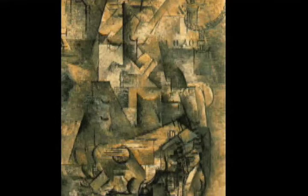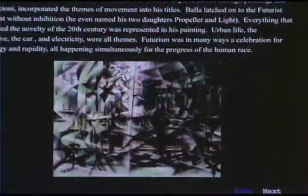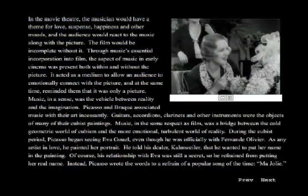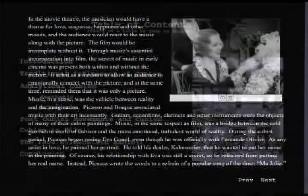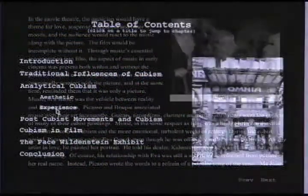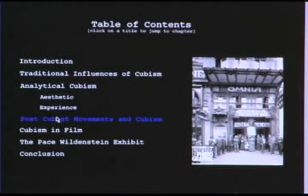Cubism is all about multiple perspectives. You look at something from this angle, and then there's a cut in the canvas drawn by a line, and then you look at something from another angle, and then another angle, and the image starts to take form the more you look at it. Film also uses multiple perspectives — it's one of the key elements of it.